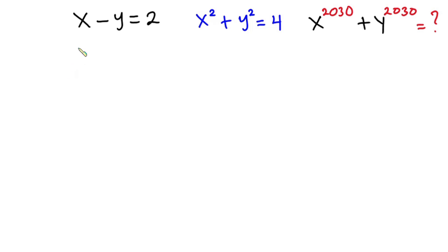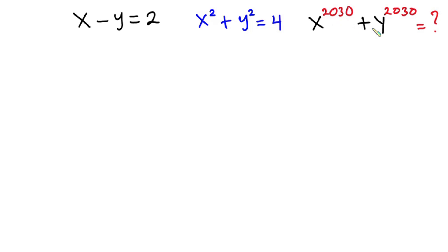Hello everyone. In this video, we have this nice problem. We have x minus y is equal to 2, then x to the power 2 plus y to the power 2 is equal to 4. And we have to find the value of x to the power 2030 plus y to the power 2030.